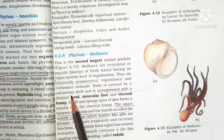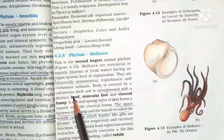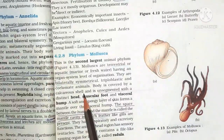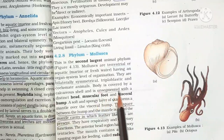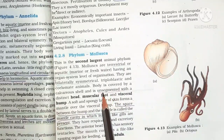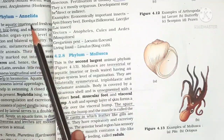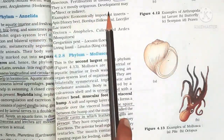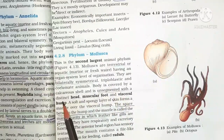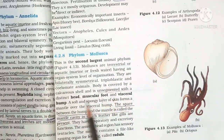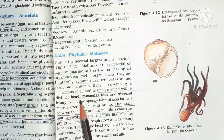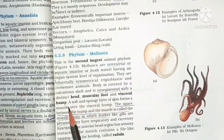The body is covered by a calcareous shell and is unsegmented — unlike Annelida and Arthropoda. The body has a distinct head, muscular foot, and visceral hump.